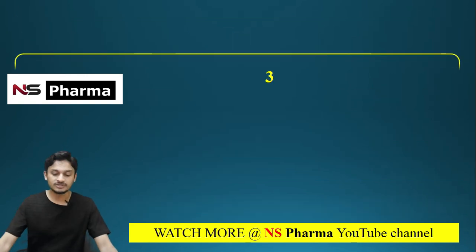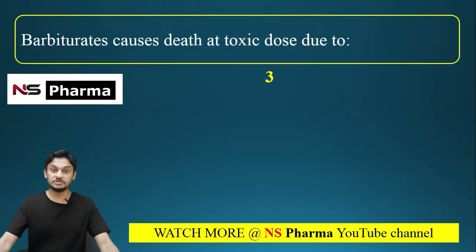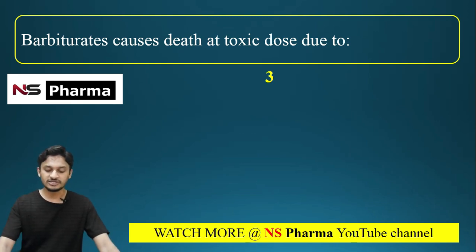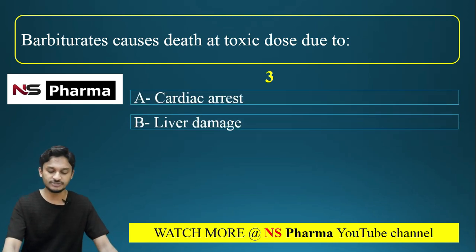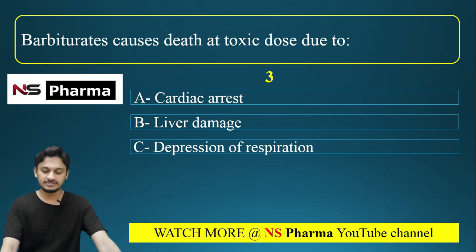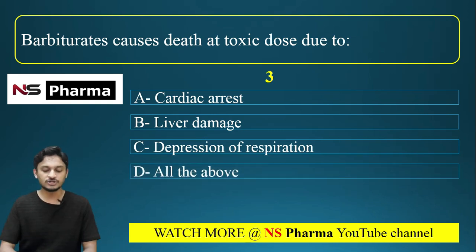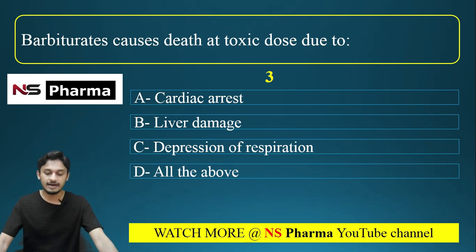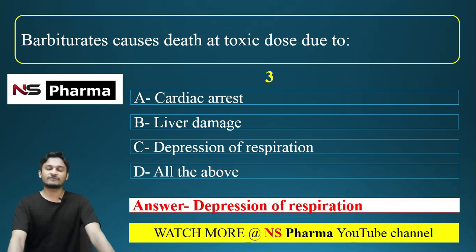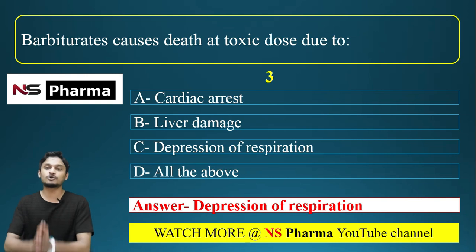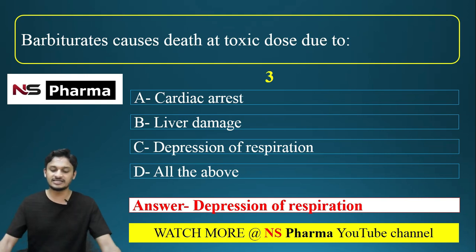Question number three: Barbiturates cause deaths at toxic dose due to — Option A, cardiac arrest; Option B, liver damage; Option C, depression of respiration; Option D, all of the above. The correct answer is Option C — depression of respiration. Barbiturates cause death at toxic dose due to depression of respiration.